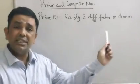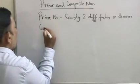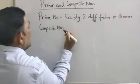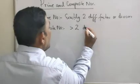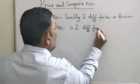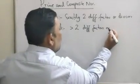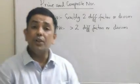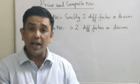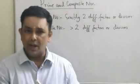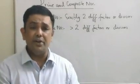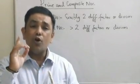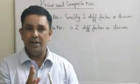What is a composite number? A composite number is a number which has more than two different factors or divisors. A number which has got more than two different factors or divisors is a composite number.